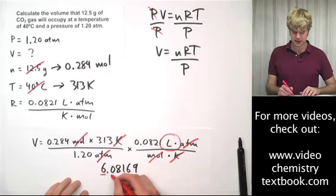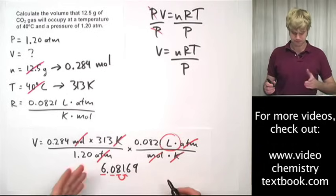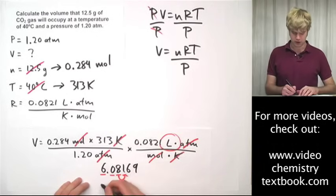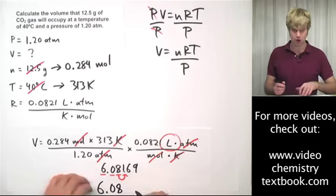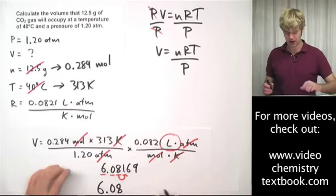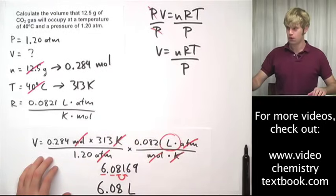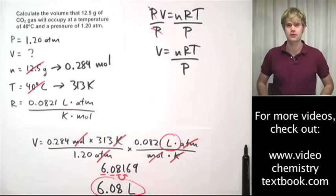So, I keep the 6, I keep the 0, and I keep the 8, and I look whether I round it up or down. I keep it the same, so my final answer is going to be 6.08. What are my units? Since the units are what I was left with after canceling, 6.08 liters, and that's my final answer for this.